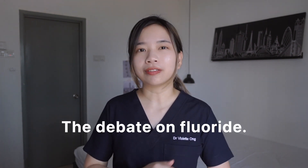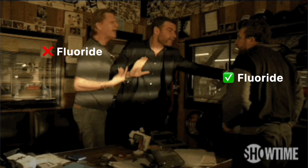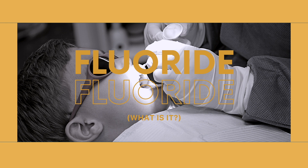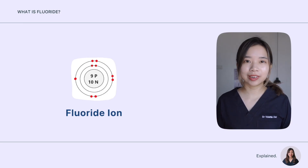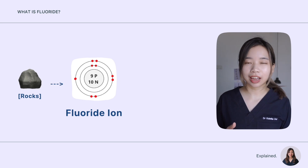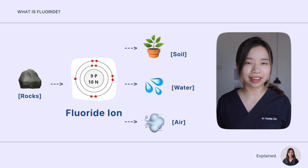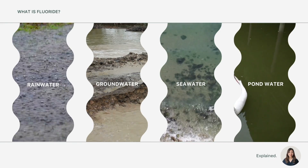The debate on fluoride has been around for a long time. People have been fighting about whether we should use fluoride in dentistry, especially in drinking water and our toothpaste. But before going there, let's first understand what fluoride is. Fluoride is a naturally occurring mineral that is released from rocks and can be found in soil, water, and air. Almost all the water in this world contains some amount of fluoride. However, the concentration of natural fluoride can differ from one region to another.